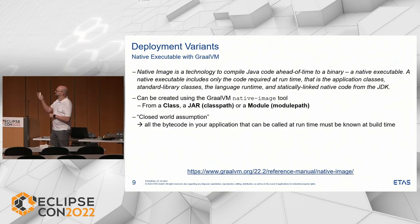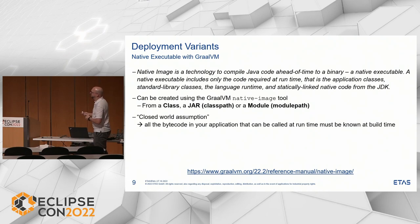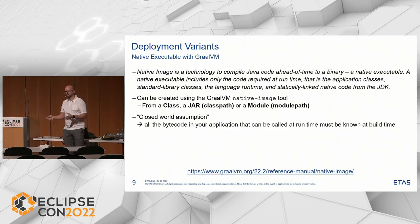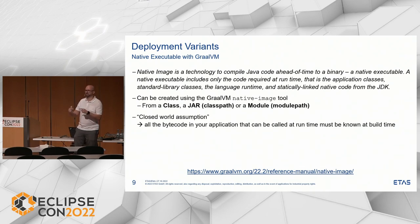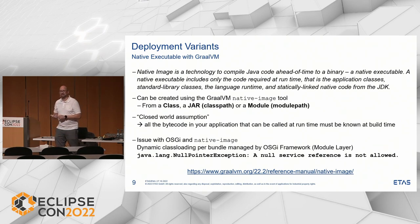For GraalVM, the native image is created statically linked. You can use input from a class path or module path, but there's a closed-world assumption: all the bytecode that should run at runtime needs to be known at build time. This doesn't match the Equinox principle where everything is dynamic. The class loading done by the OSGI framework per bundle doesn't match the native tool of GraalVM. I got exceptions like a NullPointerException — a null service reference is not allowed. I knew already about the problem and stopped further investigation there.